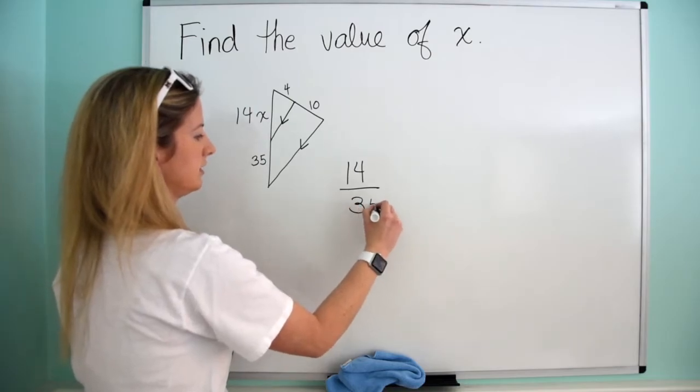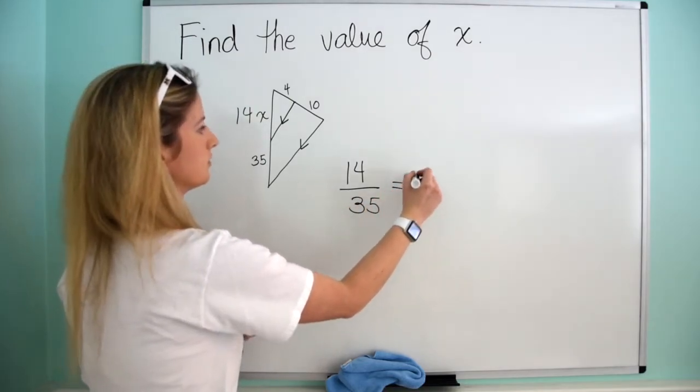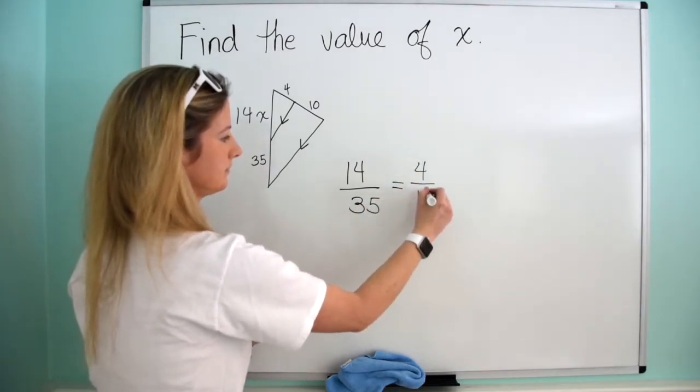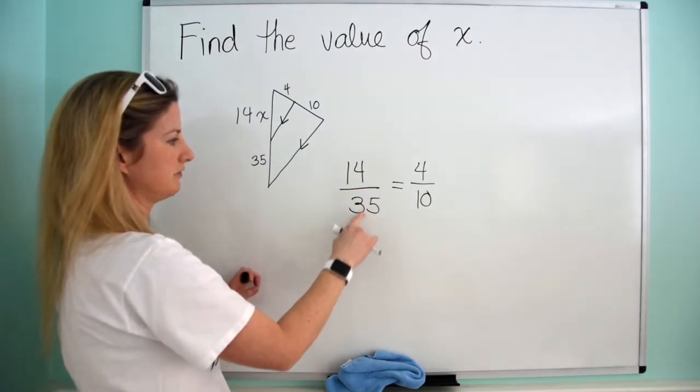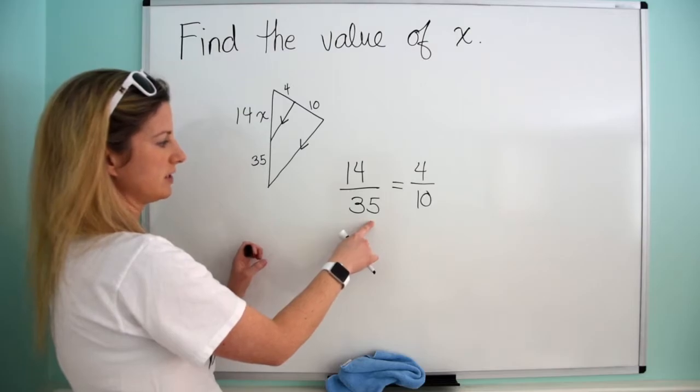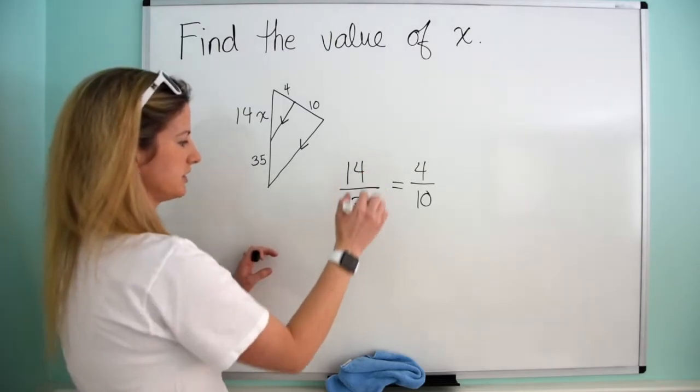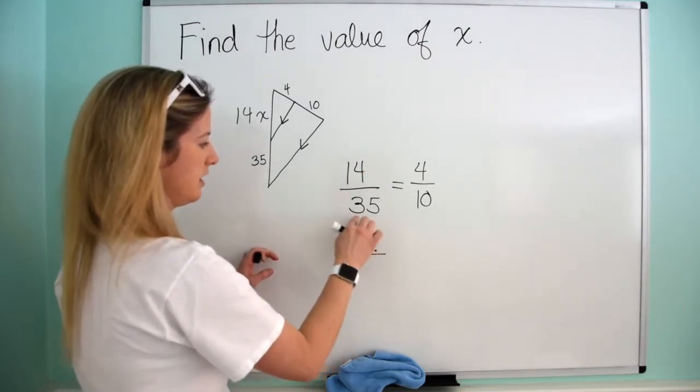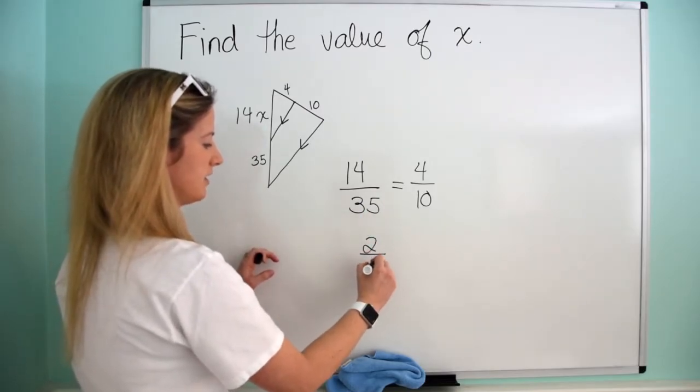So is it true that 14 over 35 equals 4 over 10? Now we're just going to simplify these fractions. 14 and 35, the greatest common divisor is 7. So 14 divided by 7 is 2, and 35 divided by 7 is 5.